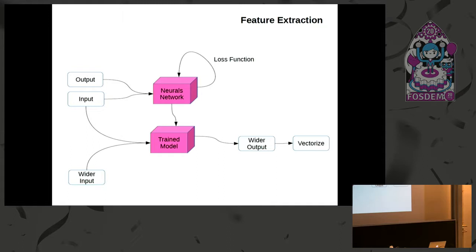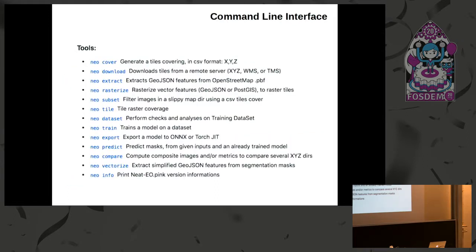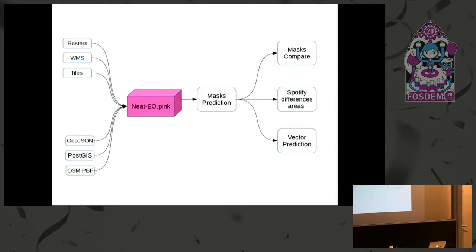The last task is feature extraction. You train your model with a small dataset on a training area, and then use a wider imagery input to compute output. For instance, you only label a small area, and once your model is trained, you can launch a prediction on a wider area and thereafter vectorize the results.